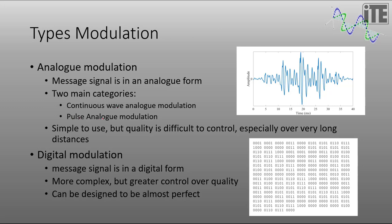So analog modulation has two different subtypes, continuous wave and pulse analog. Analog modulation is simple to use but the quality is difficult to control, especially over very long distances. So the more that we try and amplify the signal as it fades over distance, we make it a little bit worse each time we amplify it. So the quality of the signal degrades.